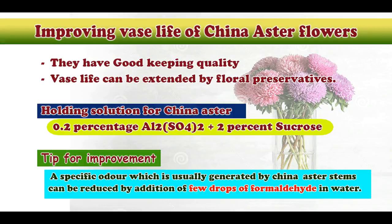Aster flowers have good keeping quality and it can be extended by floral preservatives. A holding solution of 0.2% aluminum sulfate and 2% sucrose can be used for prolonging the vase life of Aster. A specific odor usually generated by China Aster stems can be reduced by addition of a few drops of formaldehyde in water.